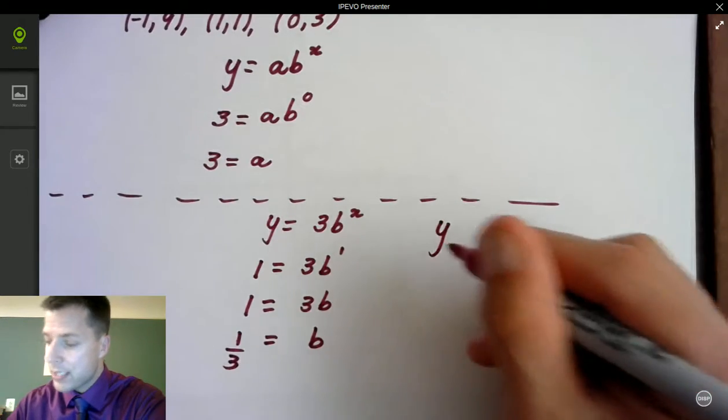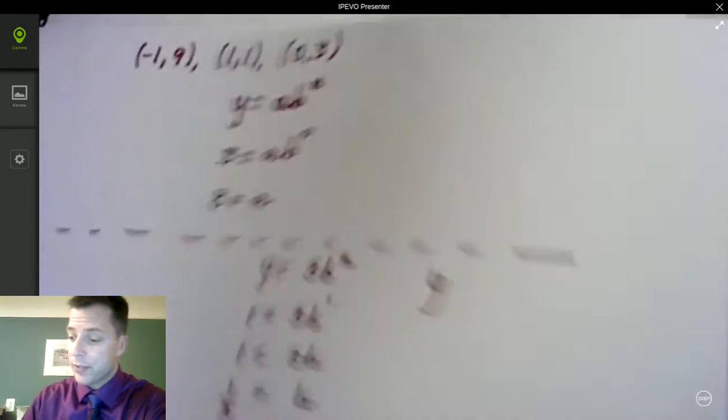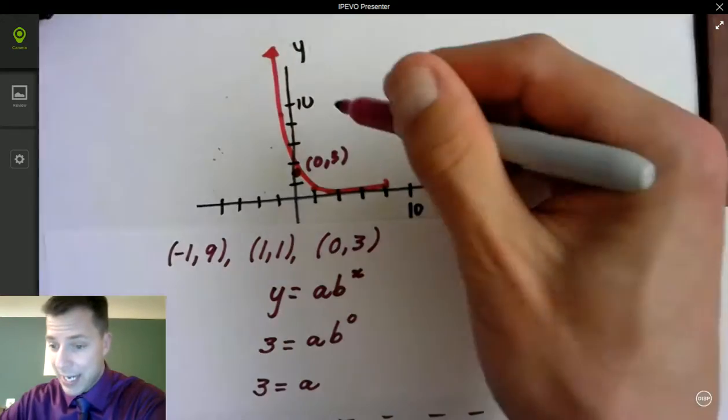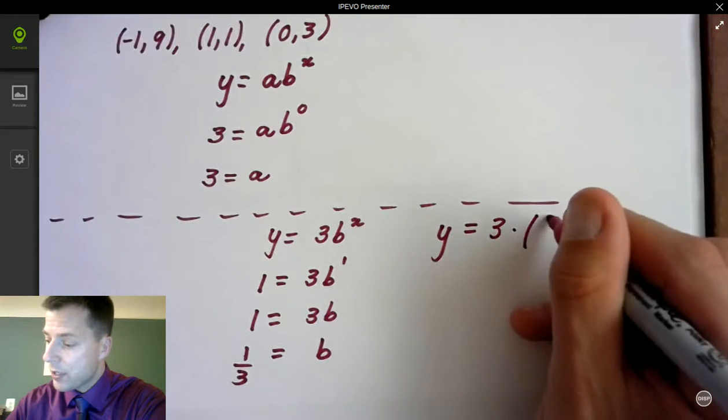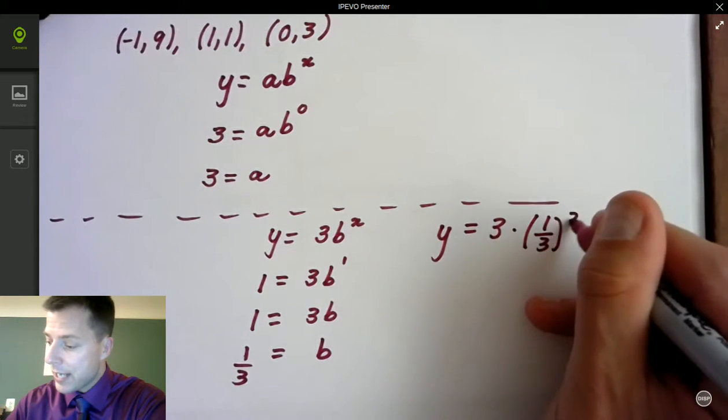So the equation that represents that graph, that exponential decay, is going to be y equals 3 times 1 3rd to the x power.